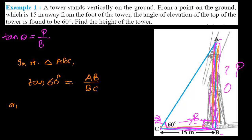The value of tan 60 is exactly root 3. We don't know the value of AB - that is our height - but we know BC is 15. So √3 = AB/15.